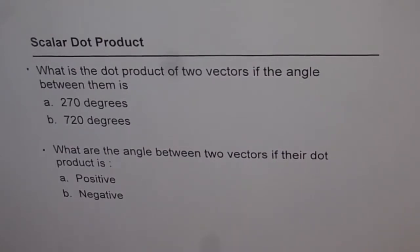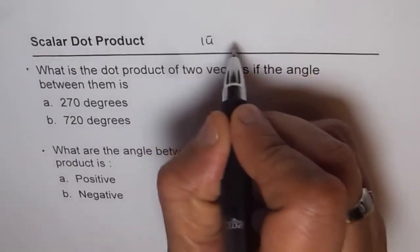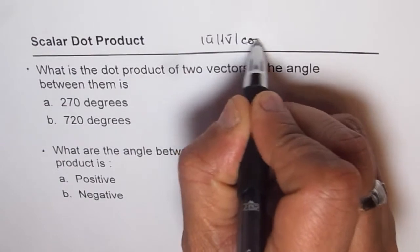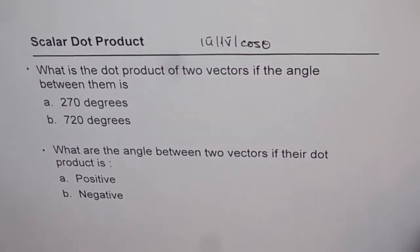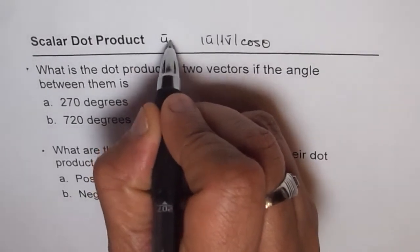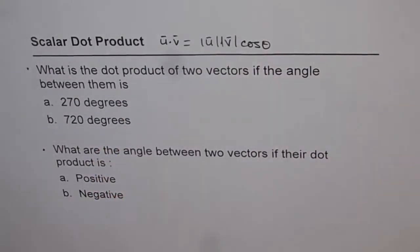Let's assume that the two vectors are u and v. As you know, |u||v| cos θ is the dot product of two vectors u and v. So if you have vector u dot vector v, you get this. Keep this in mind and answer your questions.